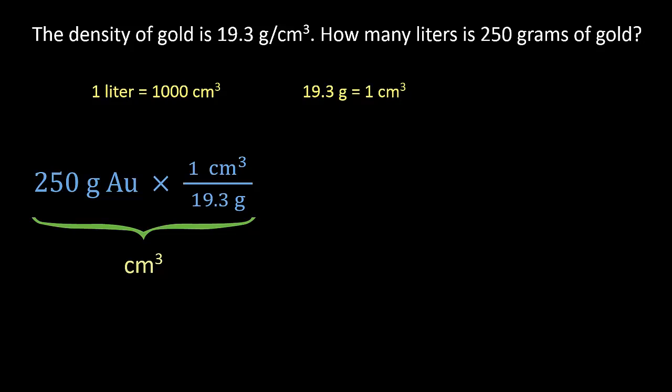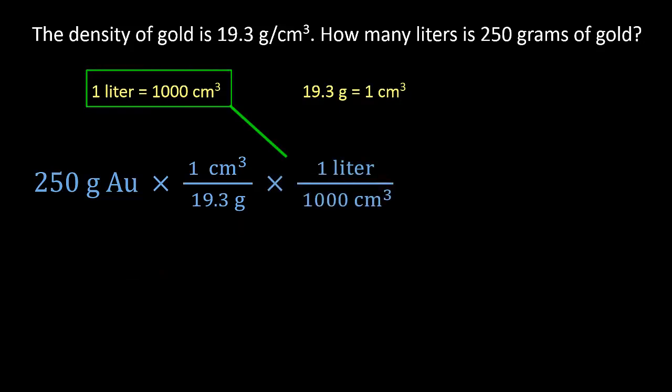We now have cubic centimeters, which we can convert to liters. Centimeter cubed goes on bottom, so that it cancels liters on top. Fill in the numerical relationship, 1,000 cubic centimeters for every 1 liter.